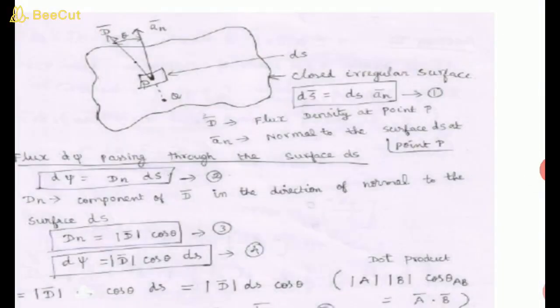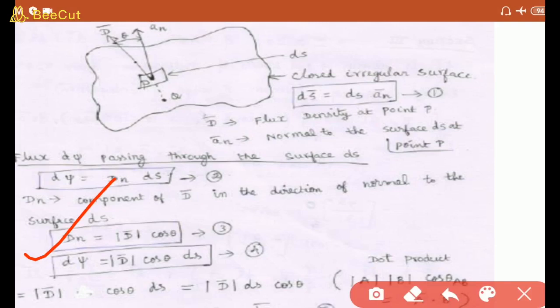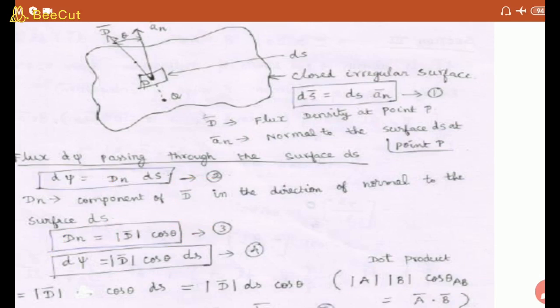If flux dΨ is passing through the surface DS, then dΨ = D_n · dS, where D_n is the component of D vector in the direction normal to the surface dS. D_n = |D| cos θ. Substituting this value, dΨ = |D| cos θ · dS, which represents the dot product concept: dΨ = |D| cos θ · dS.